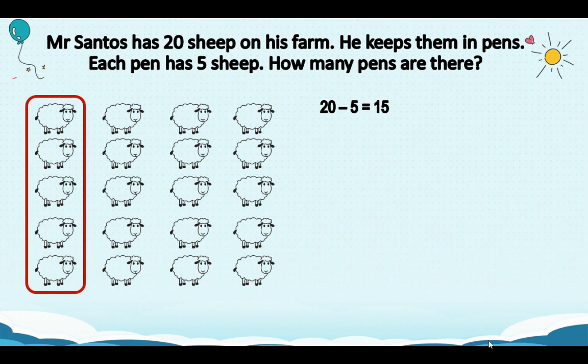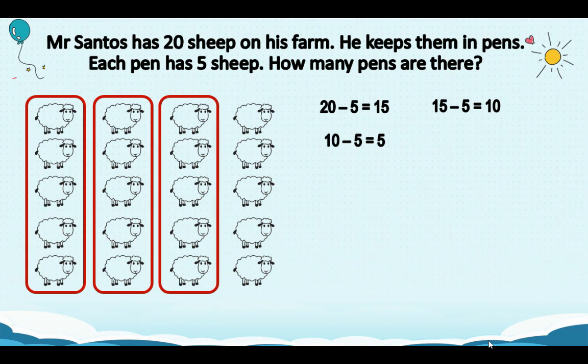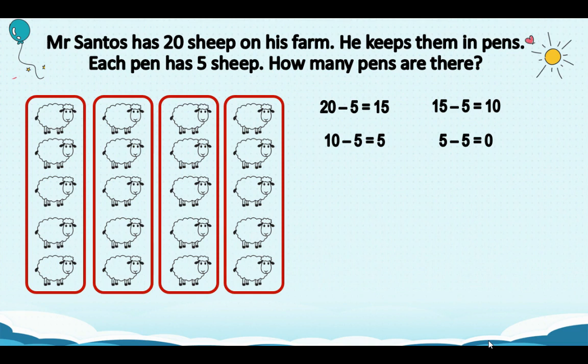Next, let's group another 5 sheep. So, 15 minus 5 equals 10. We will group again another 5. So, 10 minus 5 equals 5. Then, we will group again the other 5. So, 5 minus 5 equals 0.